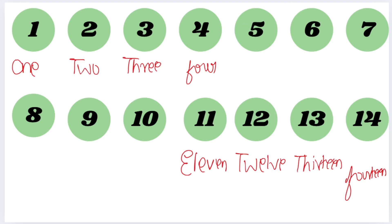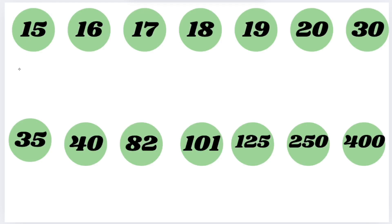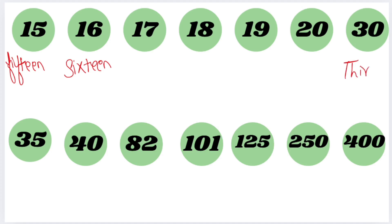Let's see more number names. This one is 15, this one is 16. So this is 17, 18, 19, 20. I think this row you could have known.